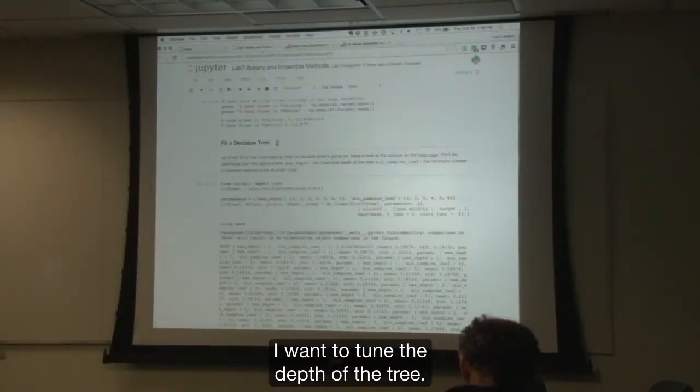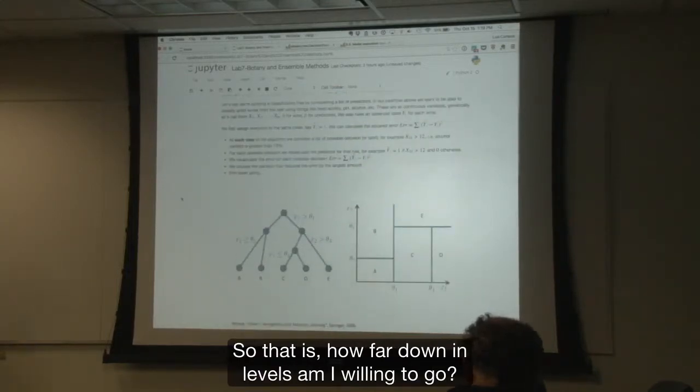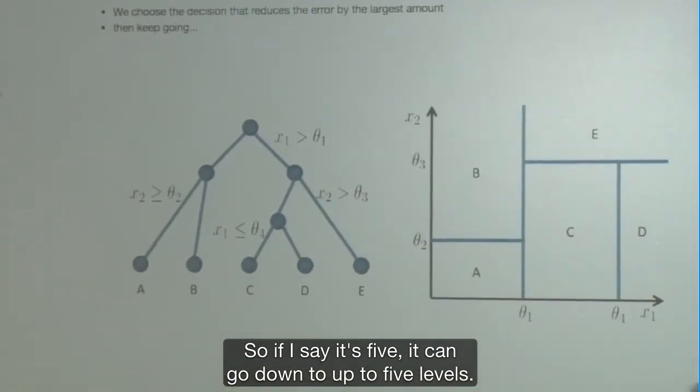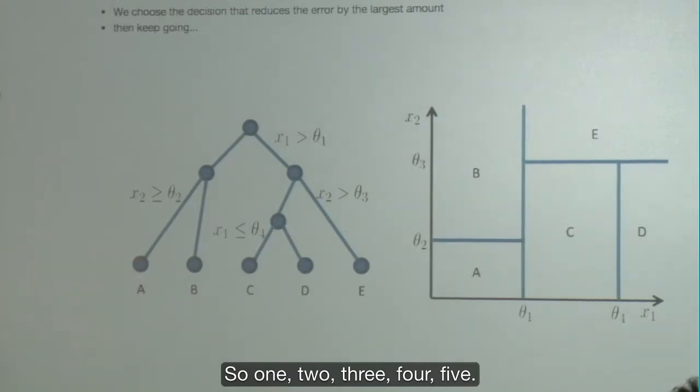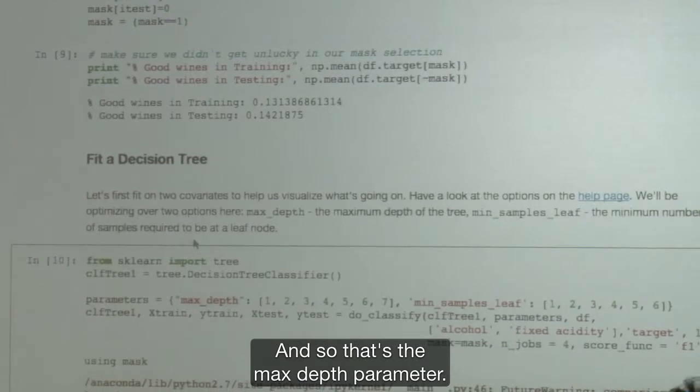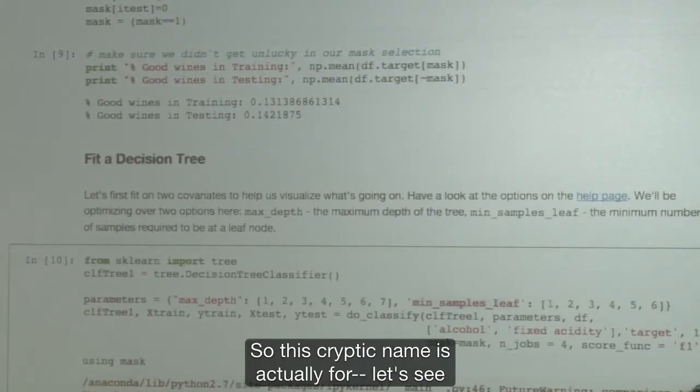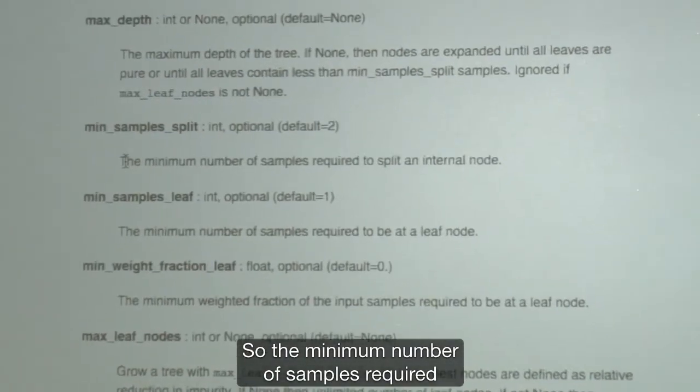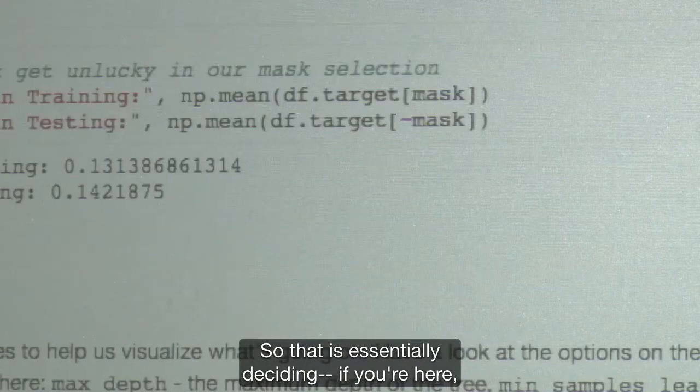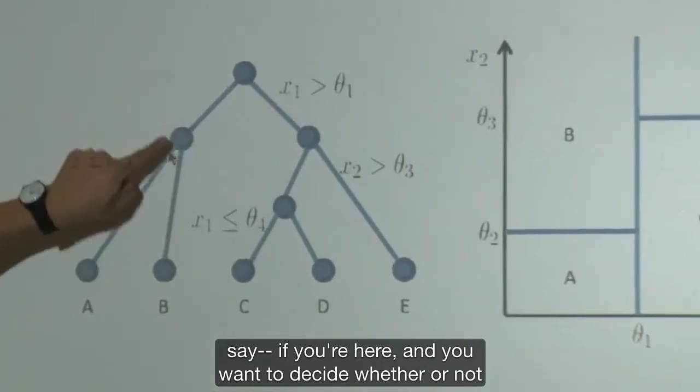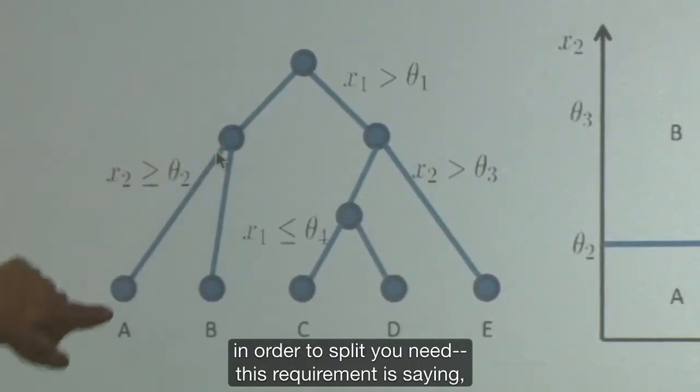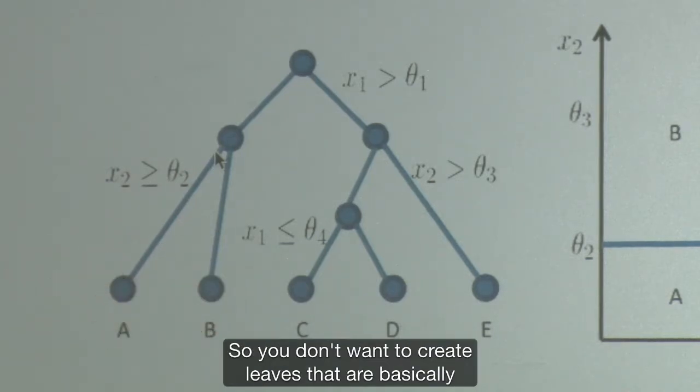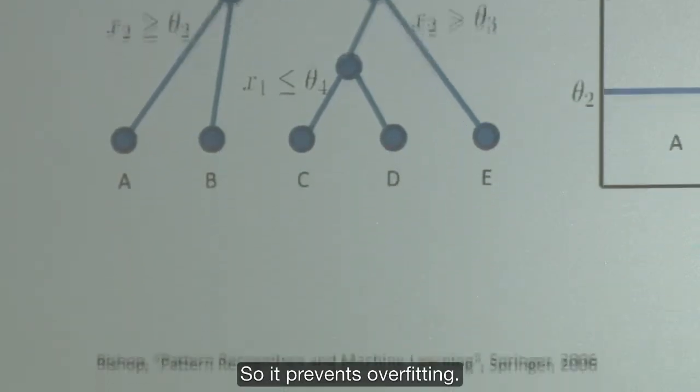I've gone through them, and I decided that I actually want to tune two. I want to tune the depth of the tree. So that is how far down in levels am I willing to go. It's an up to parameter. So if I say it's five, it can go down to up to five levels. And then the min samples leaf. So the minimum number of samples required to split an internal node. In order to split, you need at least n number of samples that are going to go to either one. So you don't want to create leaves that are basically one observation. So it prevents overfitting.